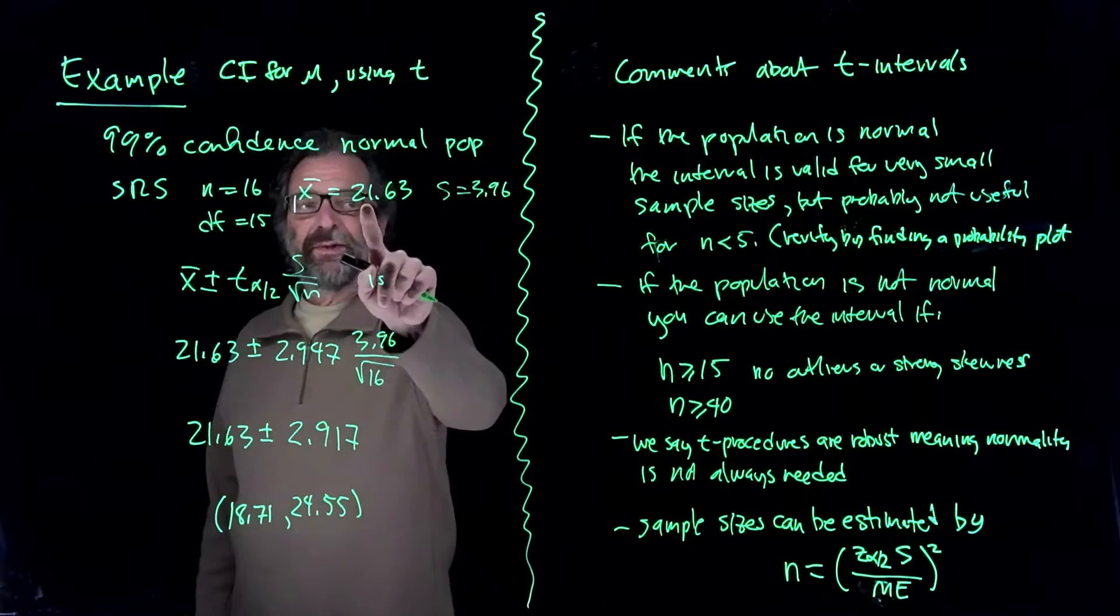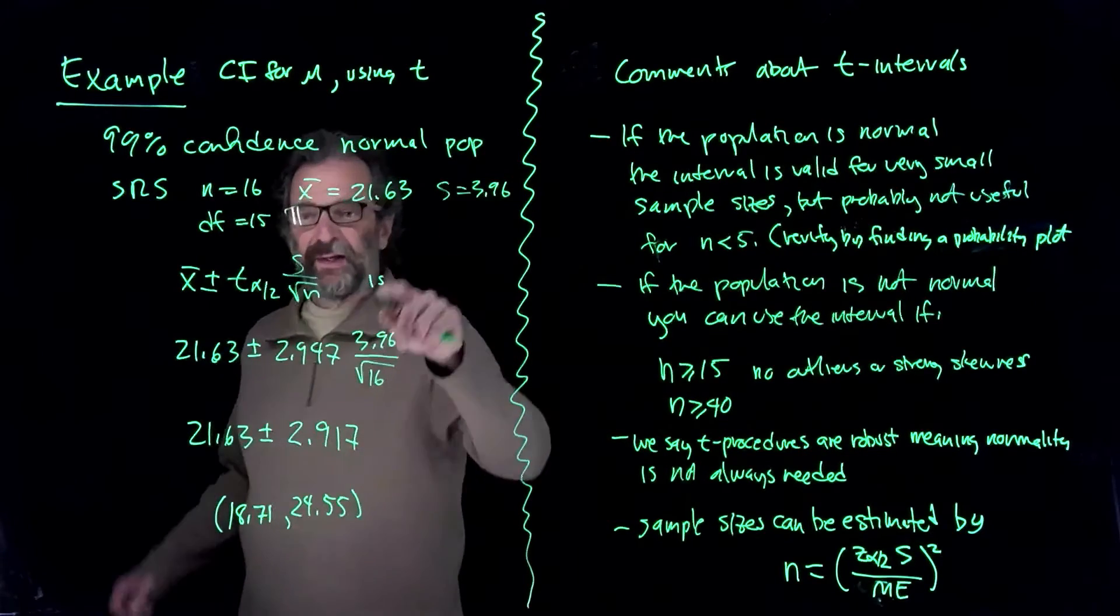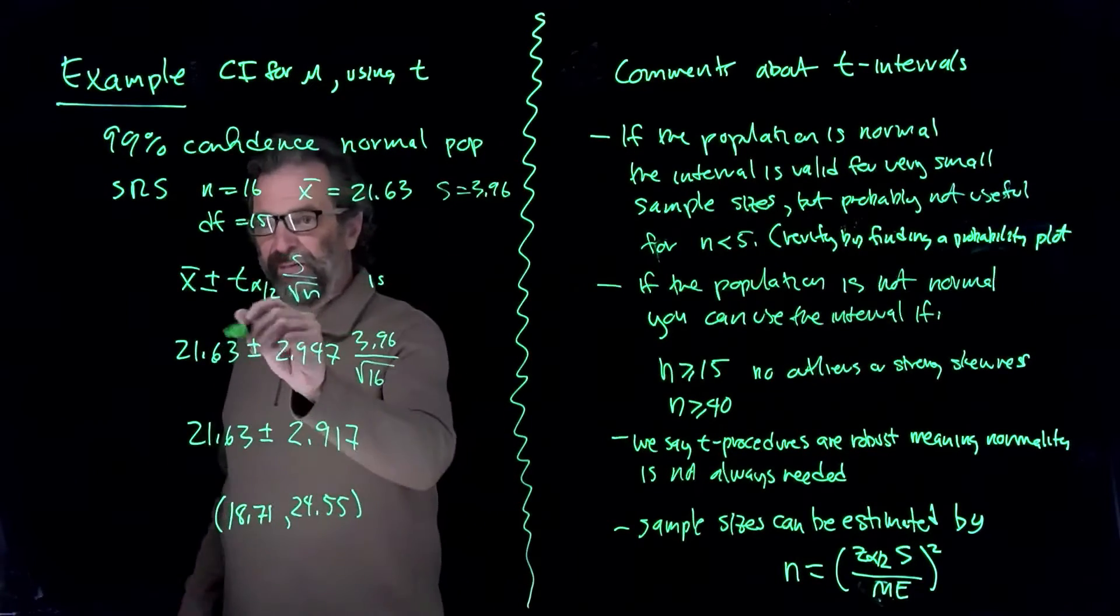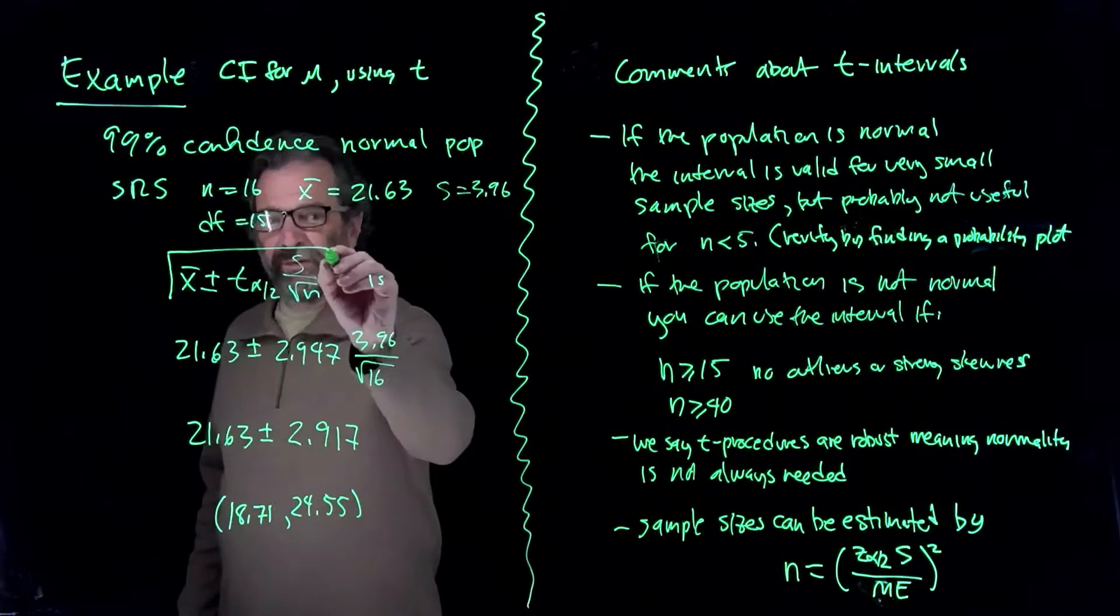Here's X bar is 21.63. Here's S, 3.96. Here's the formula for the confidence interval.